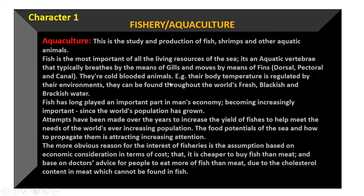Fish can be found throughout the world's fresh, blackish, and brackish water. When we talk about fresh water, we talk about streams. There are streams that are blackish in color — if you look at the water, the depth seems blackish. Brackish water is also a type of water environment where fish are found.